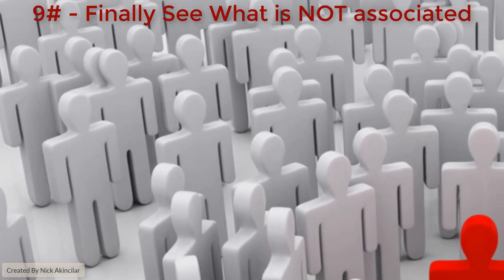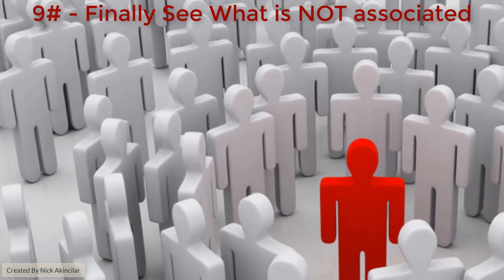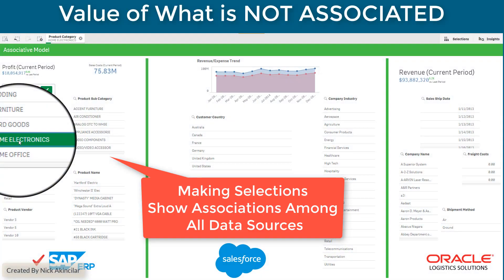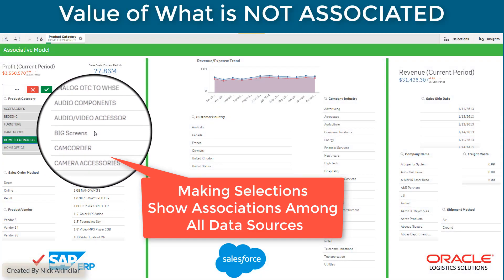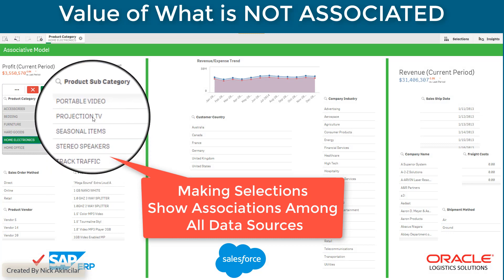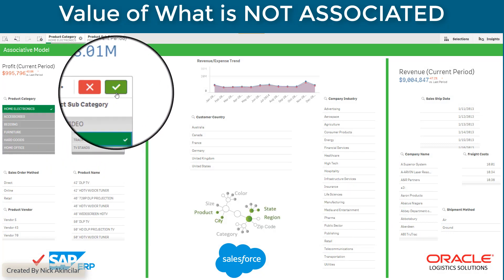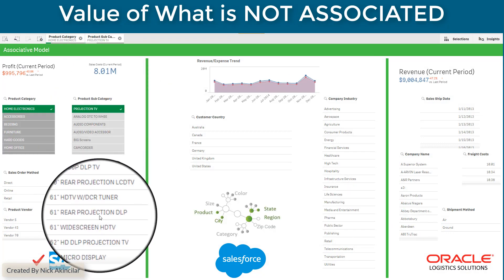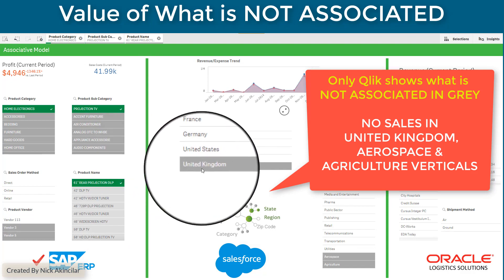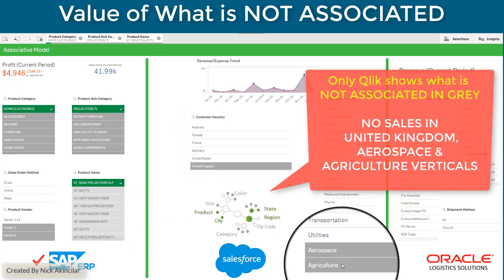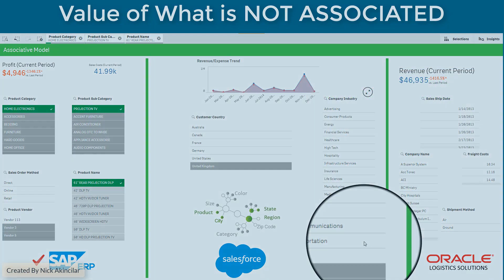Number nine: see what's not associated. SQL-based products only show you what's associated with your filters. Qlik will show you both what's associated and what's not — because sometimes the biggest insights are hidden in the values that are not associated, such as which countries and verticals you are not selling a product in.